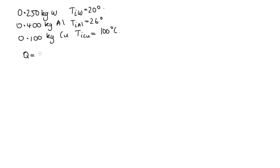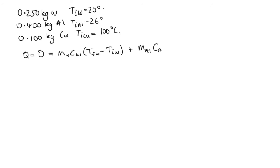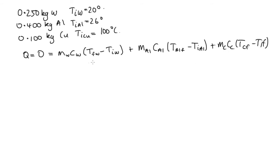We know that no heat is transferred into or out of the system, so the total heat transfer is equal to 0. This equals the mass of the water times the heat capacity of the water times the change in temperature of the water, which is the final temperature minus the initial temperature of the water, plus the mass of aluminium times the heat capacity of aluminium times its change in temperature, plus the mass of copper times the heat capacity of copper times the change in temperature of the copper, which is the final temperature minus the initial temperature of copper.